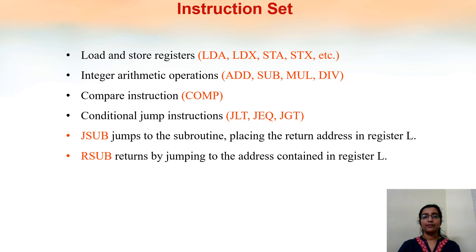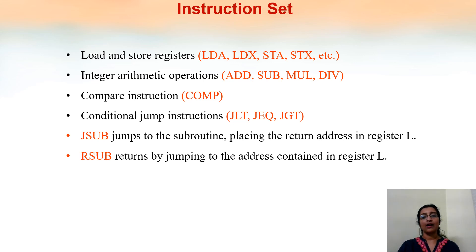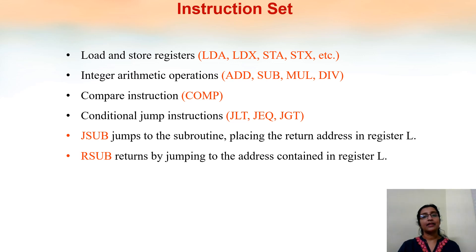Two other instructions are related to subroutines. A subroutine in assembly language is similar to a function. JSUB (jump to subroutine) transfers control from the main program to a subroutine, and the return address is automatically placed in register L, the linkage register. After executing the statements in the subroutine, it returns to the main program using the RSUB instruction, which is similar to the return statement in functions. These registers, memory, data format, instruction format, addressing modes, and instruction set together form the architecture of the SIC machine.